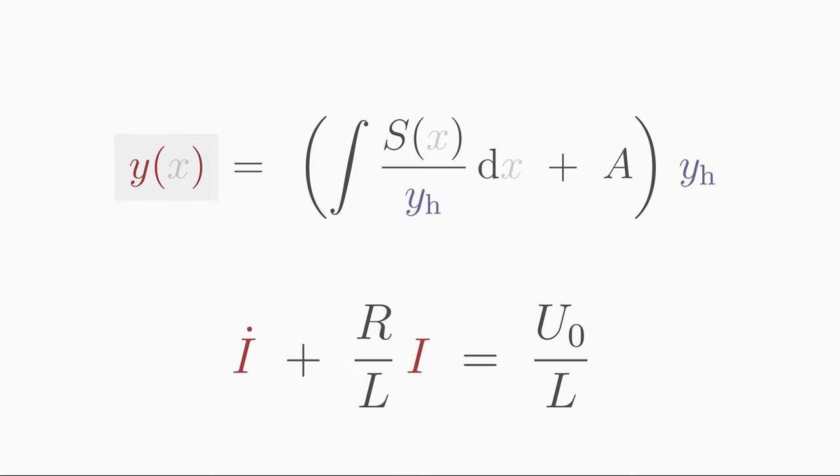The searched function y corresponds here to the current I. The perturbation function s corresponds to U0 over L and is time independent in this case. We denote the homogeneous solution by Ih.